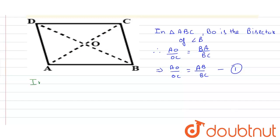Now in triangle ADC, DO is the bisector of angle D. So by angle bisector theorem we get AO upon OC is equal to DA upon DC. We can write this as AO upon OC is equal to AD upon CD.